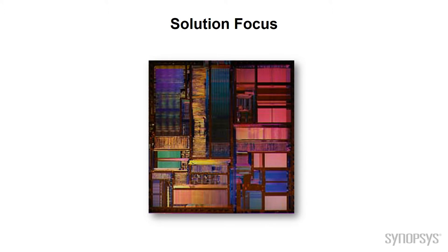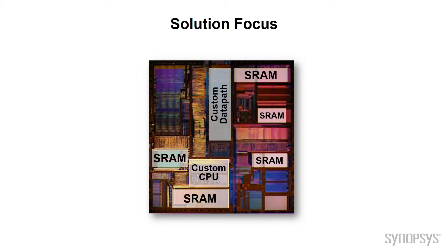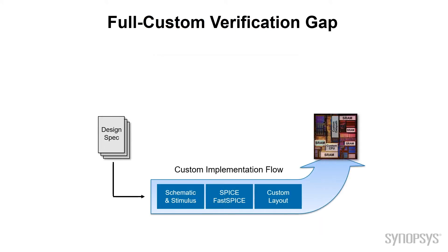While custom design can have RF and analog components, the solution we'll be discussing will focus on full custom logic design. A typical full custom design flow looks similar to this diagram. A full custom design often starts with a specification — a requirement spec, a functional spec, or even the last generation of the design with a simple 'make it work at the next node.'